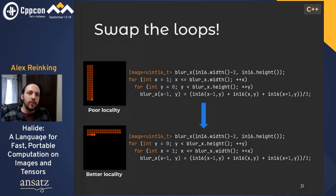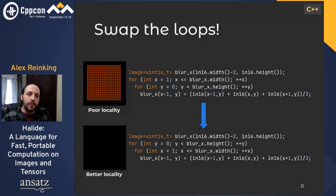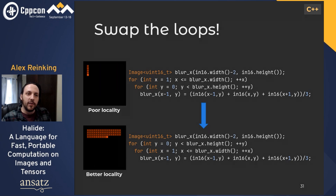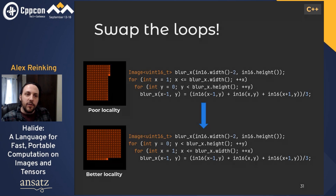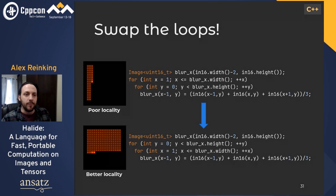Fortunately, there's a simple fix: just swap the loops. You don't need to make any changes to the assignment since all loop iterations are independent. Now you'll access consecutive cache lines, which is much better for the CPU. If you do this, it drops to 8 milliseconds on the same image — a 12 to 13x speedup, a full order of magnitude.